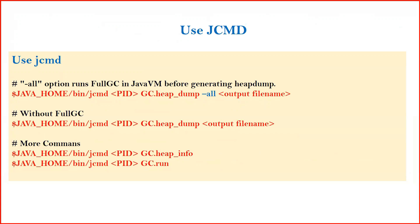Another option is jcmd, which also comes bundled with your Java JDK. With jcmd, you specify the -all option to run full garbage collection before taking the heap dump; omitting -all skips the GC. The command uses jcmd followed by the PID, then GC.heap_dump, then -all, and then the name of the dump file. You also have additional parameters like GC.heap_info and GC.run available.